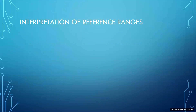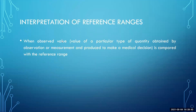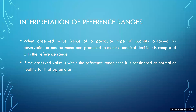Interpretation: the observed value from doing the test is compared with the reference range to see if it is normal or abnormal. If your value is within the range, it is considered normal or healthy for that parameter. For example, with a glucose range of 90 to 110, if the test gives 95, comparing it with the reference range shows it is within the range — so the patient's sample is considered normal.